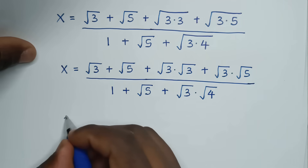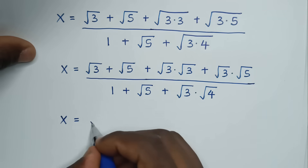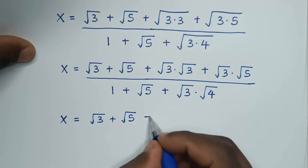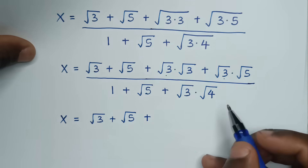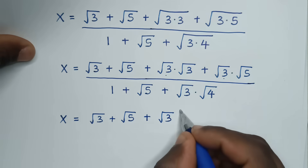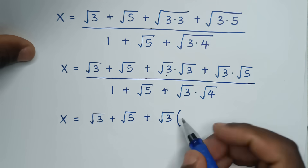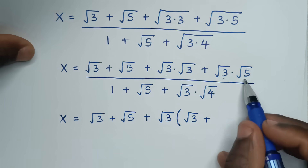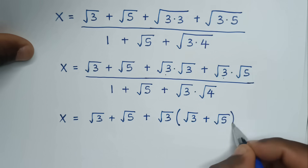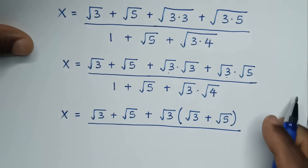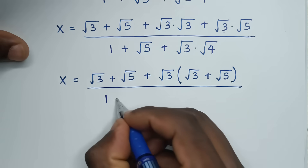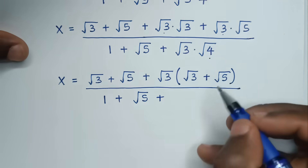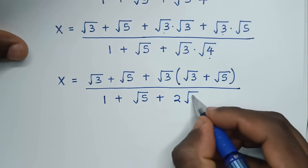In the next step, x equals square root of 3 plus square root of 5, and square root of 3 is common in the numerator so we take it out of the bracket. In the denominator, square root of 3 is also common. Since square root of 4 is 2, the denominator term becomes 2 times square root of 3.